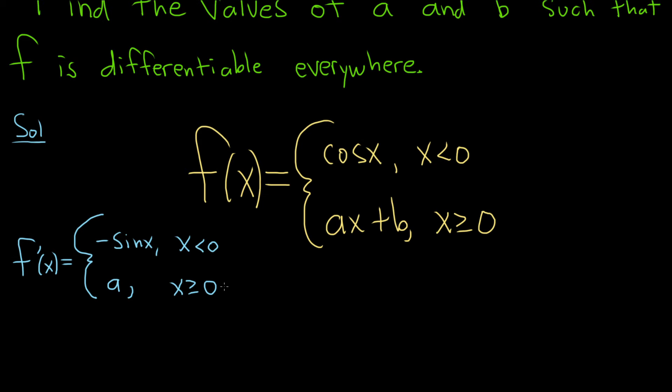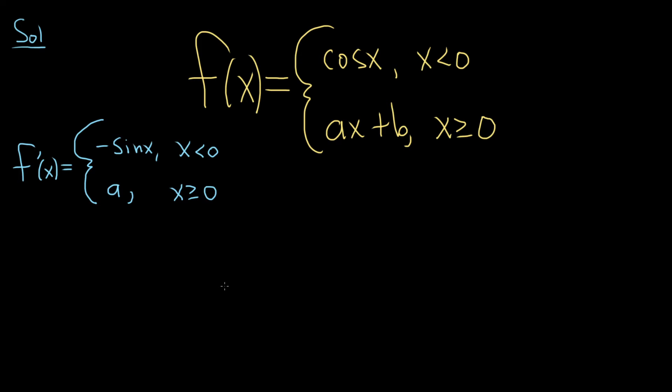We want differentiability at 0, so we need negative sine of 0 to equal a. We want both pieces of the derivative to be the same at 0, equal to f'(0). Since sine of 0 is 0, that means a equals 0. So we have our a.